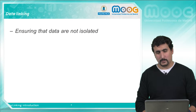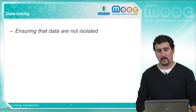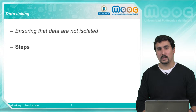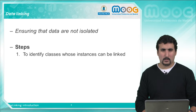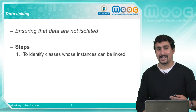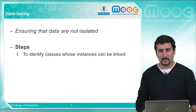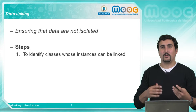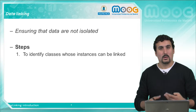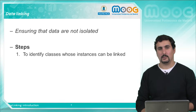This is our purpose with data linking. We want to make sure that our data is not isolated, and for that we have four main steps. First, we have to identify categories — that is, classes in our dataset that can be linked to other datasets, meaning classes that we can find in other datasets. In general we will talk about popular classes, or classes that are general enough to be found in different data sources.